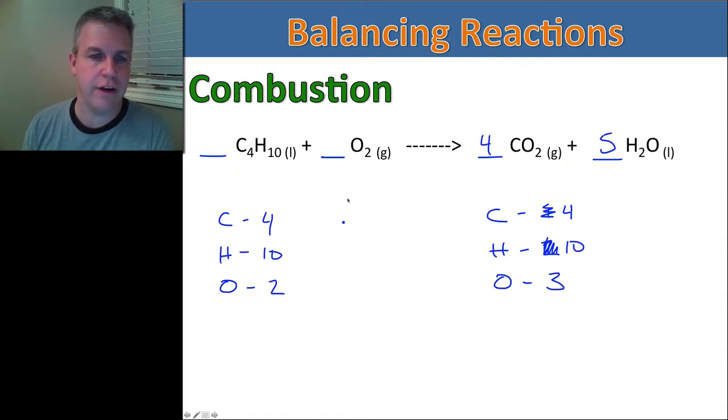Now let's take a look at oxygen. I have two on this side, and on this side, I have four times two, which gives me eight, plus five gives me a total of thirteen.